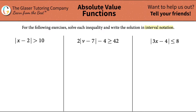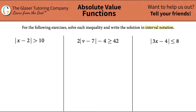The first one says that the absolute value of x minus 2 has to be greater than 10. Now remember, the alligator is chomping on the bigger side. I always like to envision this as an alligator mouth chomping on the bigger part. So since it's chomping this way, that means this side has to be bigger.